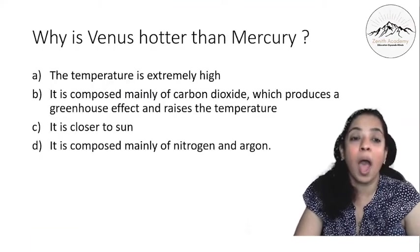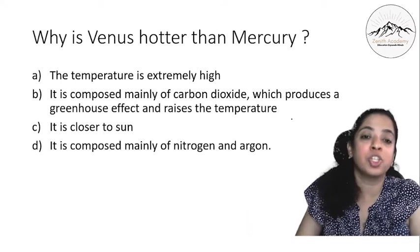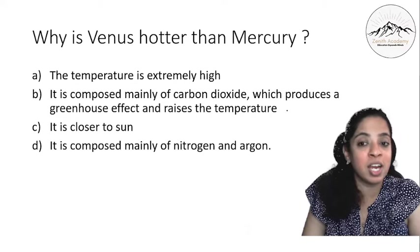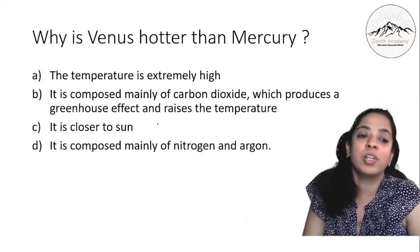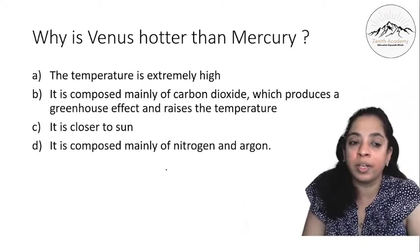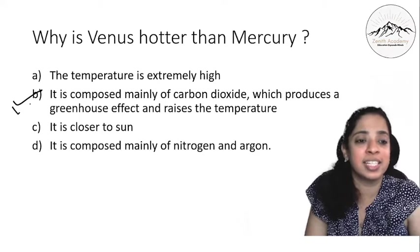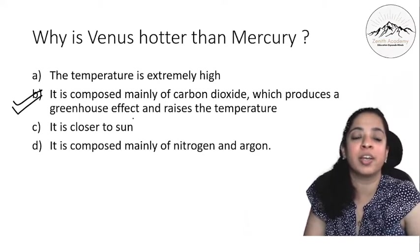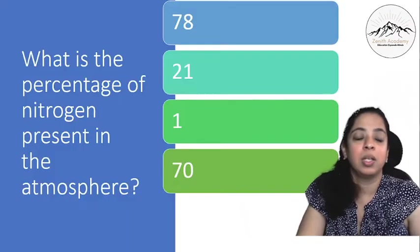Next, why is Venus hotter than Mercury? The temperature is extremely high, or is it composed mainly of carbon dioxide which produces a greenhouse effect and raises the temperature, or is it closer to the sun, or is it composed mainly of nitrogen and argon? So the correct answer is this. It is composed mainly of carbon dioxide which produces a greenhouse effect and raises the temperature.